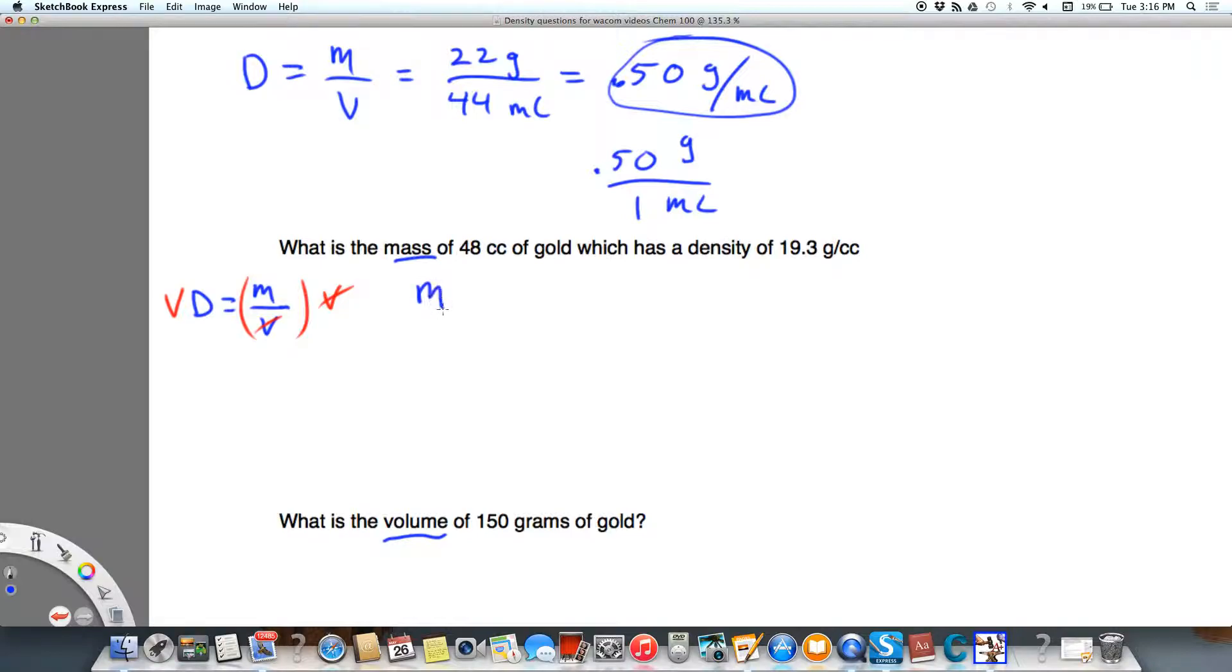And we learn that mass is equal to density times volume, which is equal to 48 cc, that's my volume, times 19.3 grams per cc. Now you'll notice, doing it this way, that cc's cancel, and my mass is equal to 926 grams of gold.